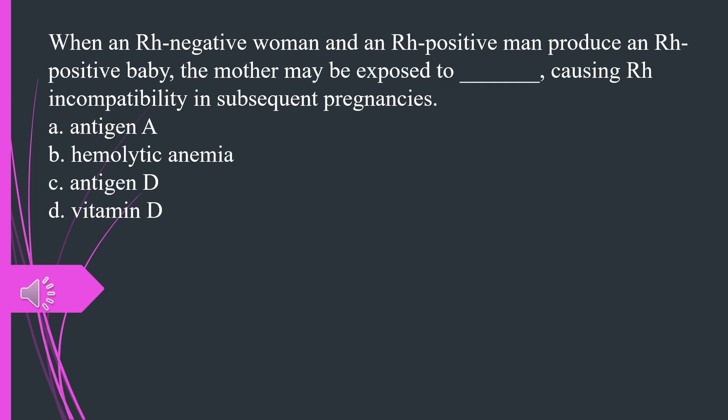When an Rh-negative woman and an Rh-positive man produce an Rh-positive baby, the mother may be exposed to what, causing Rh incompatibility in subsequent pregnancies. A. Antigen A B. Hemolytic anemia C. Antigen D D. Vitamin D. The answer is C, antigen D.